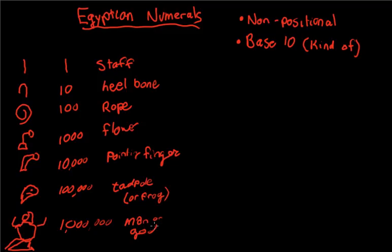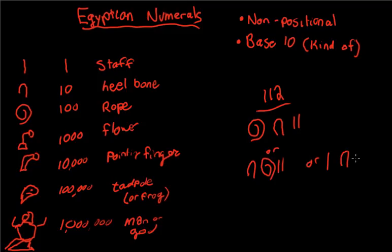Alright, so the way they represent numbers, like I said before, they just use the symbols they need for that number. For example, 112. They would need a rope for 100, and they need two of those heel bones. And like I said, they can write it in any order. They could separate the symbols, although they generally don't. Generally, if you have two of the same symbols, you write them all in a row, or you write as many of them in a row as possible, or on top of each other, pretty close to each other. But it's not actually a rule in their number system.